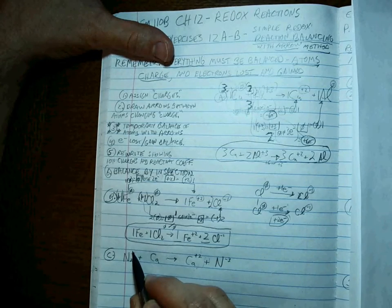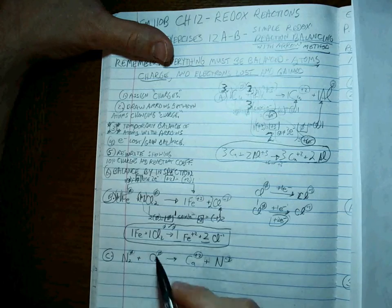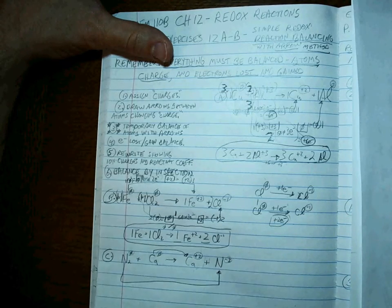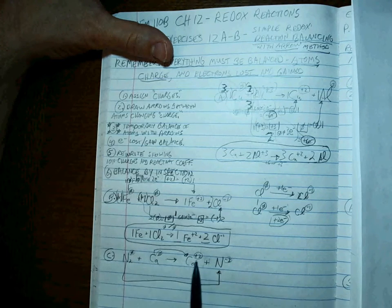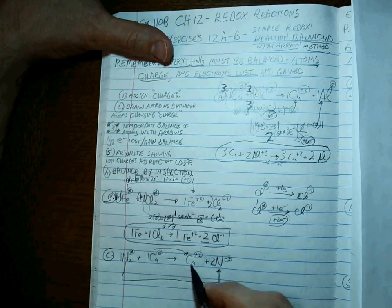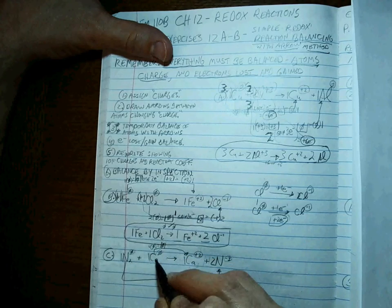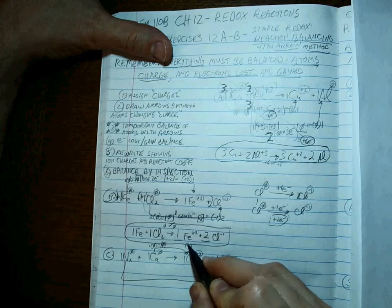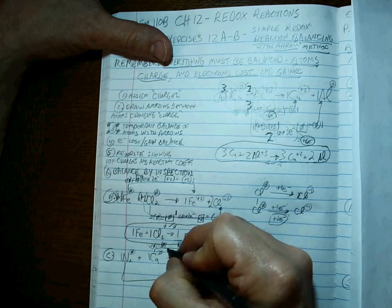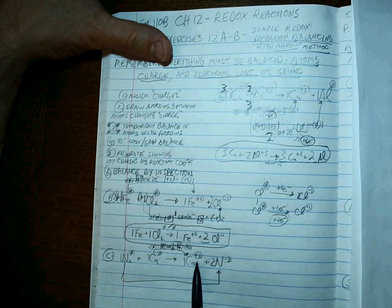Problem C: N₂ plus Ca go to Ca²⁺ plus N³⁻. Charges: N₂ is zero, Ca is zero, Ca²⁺ is plus two, N³⁻ is minus three. Draw arrows: calciums to calcium ions, nitrogens to nitride ions. Temporary balance: if there's one N₂, there have to be two N³⁻ ions. One calcium here, one calcium here. One Ca⁰ times zero is a total of zero; one Ca²⁺ times plus two is a total of plus two. From zero to plus two — we lost two electrons.